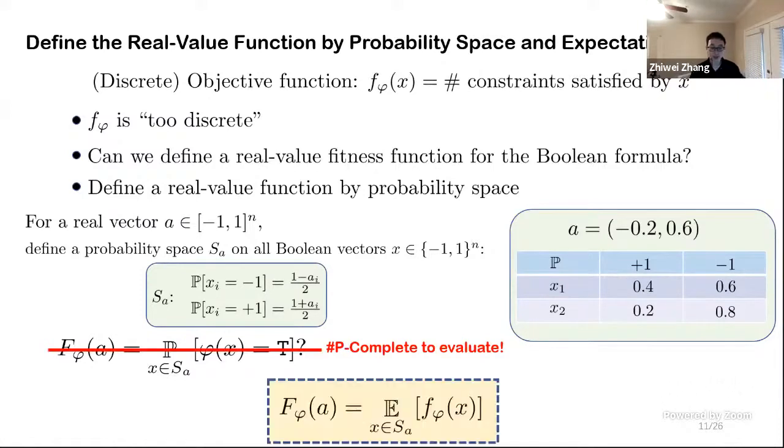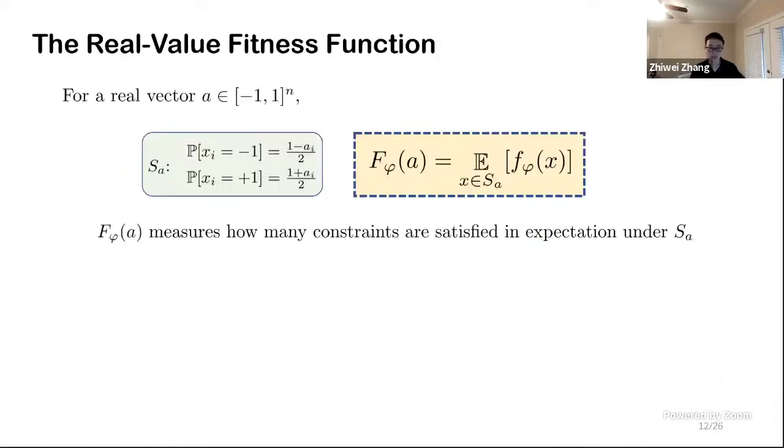But we can step back and compute something easier, which is the expectation of the original objective function under this probability space. Now, the capital F, the fitness function, measures how many constraints are satisfied in expectation under the probability space.